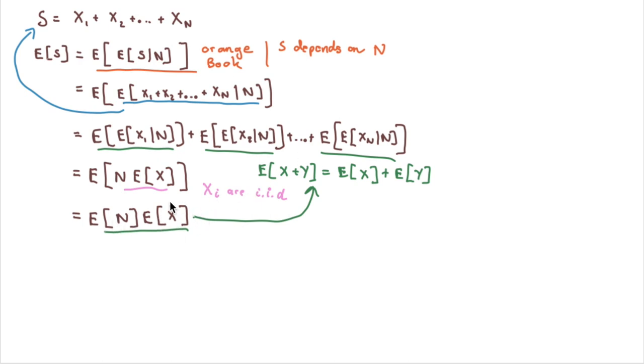So if you get confused, coming from this step to this step, it's important to realize that the expected value of X is a constant, and our N is the random variable over there. Of course, expected value of N is now no longer a random variable, it is now a constant as well.